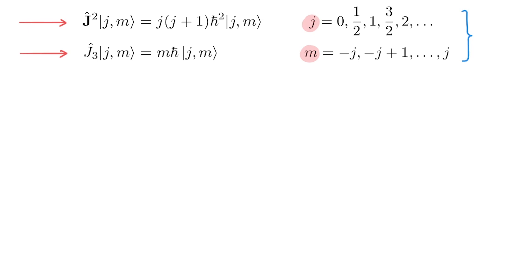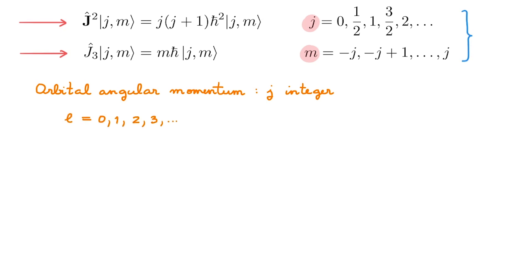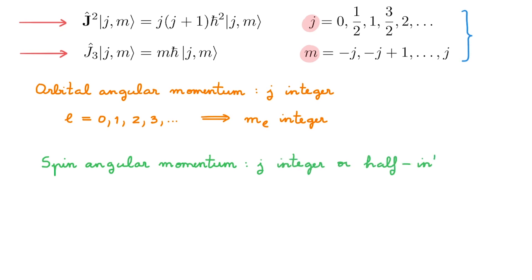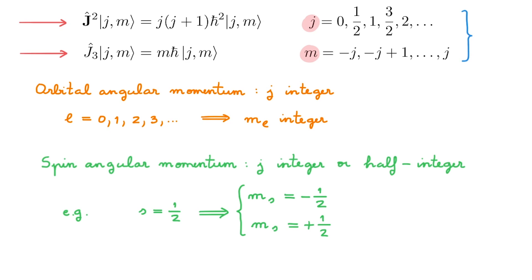It turns out that when we have orbital angular momentum, the only values of j that can occur are the integer values — so l can only be 0, 1, 2, 3 and so on, and as a consequence m_l must also be an integer. The story is completely different with spin angular momentum: j can take both integer or half-integer values. The most important example is spin 1/2, where s = 1/2, and then m_s can be either −1/2 or +1/2. Spin 1/2 is central in quantum mechanics because the electron happens to be a spin-1/2 particle, meaning that to study anything from the simplest atom to the most complex material, the theory of spin-1/2 angular momentum is a must.